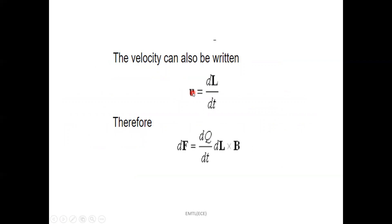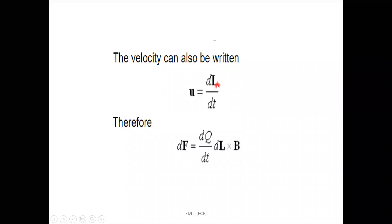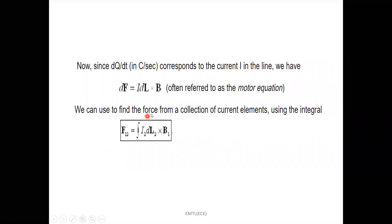Now, according to the definition of velocity — distance by time — for a current element with a small differential charge, it moves a differential length dL in a differential time dT. So velocity U = dL/dT. Substituting U into the dF expression: dF = (dQ/dT)(dL × B). According to the definition of current, the rate of flow of charge dQ/dT corresponds to current I. So by replacing dQ/dT with current I, the expression for differential force becomes dF = I dL × B.